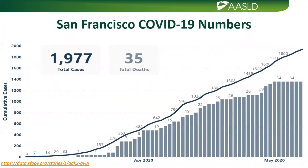In San Francisco at UCSF, we were anticipating a surge but our numbers did not increase significantly. We have close to 2,000 total cases and 35 deaths total, which have been very stable in the last seven days.